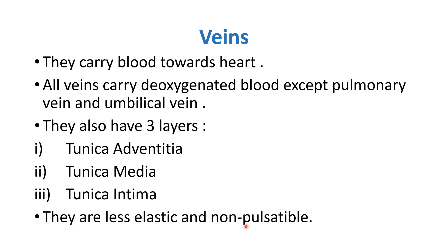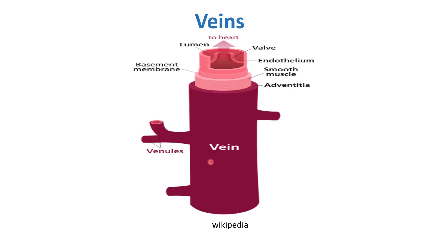Veins are less elastic and non-pulsatable. Arteries are elastic and pulsatable, but veins are not pulsatable, and their elasticity is less compared to arteries. To understand the three layers of veins, here is a diagram. The outermost is tunica adventitia, then tunica media comprising smooth muscle and basement membrane, and finally tunica intima containing endothelium, lumen, and valves.